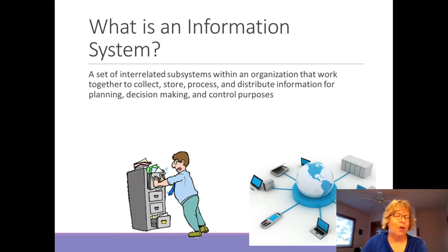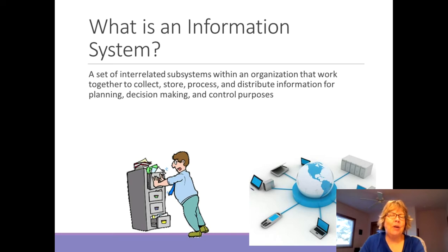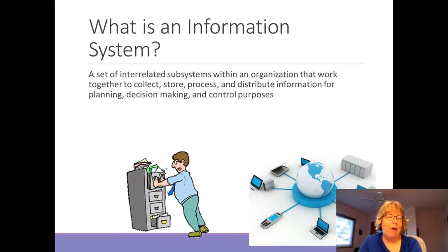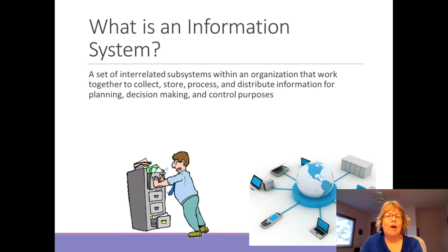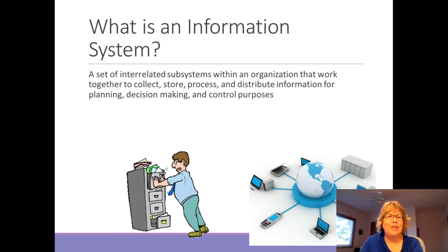This information is then used for planning, decision making, and control. Now there are two different types of systems — one is a file cabinet, and yes, technically that could be an information system. However, we typically refer to an information system as a computerized system, because that's really the only way to get good information out quickly for running businesses. So from here on out, we'll refer to an information system as a computerized system that collects, stores, processes, and distributes information.